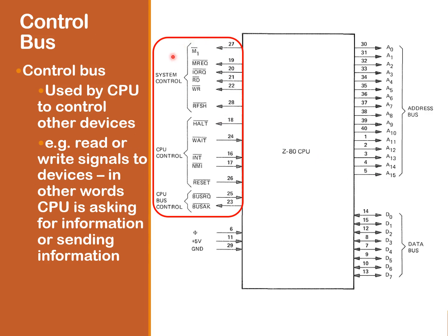Next is the control bus. On the Z80, you can have the system control, the CPU control, and the CPU bus control. Essentially, the control bus carries signals such as read and write signals, indicating whether the CPU is requesting information or sending information.